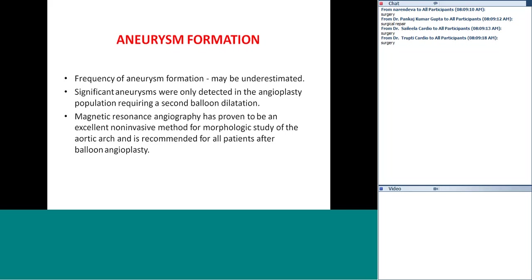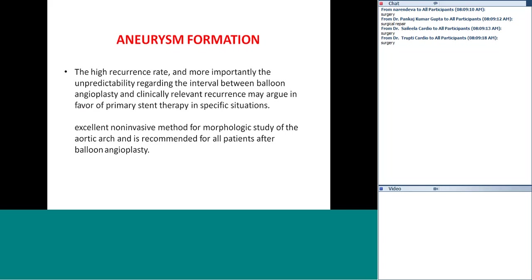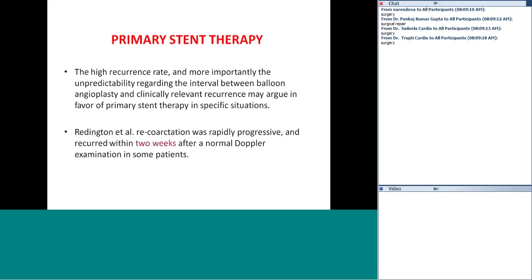Regarding primary stent therapy: we usually try to avoid stents in neonates and children and wait for them to grow so that larger stents can be placed. However, the high recurrence rate and unpredictability of the interval between balloon angioplasty and clinically relevant recurrence may argue in favor of primary stent implantation in specific situations.